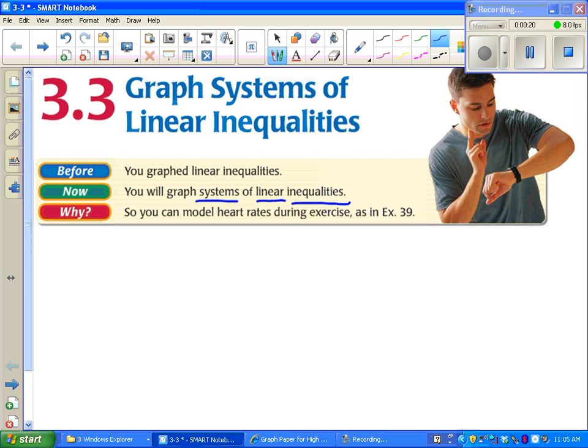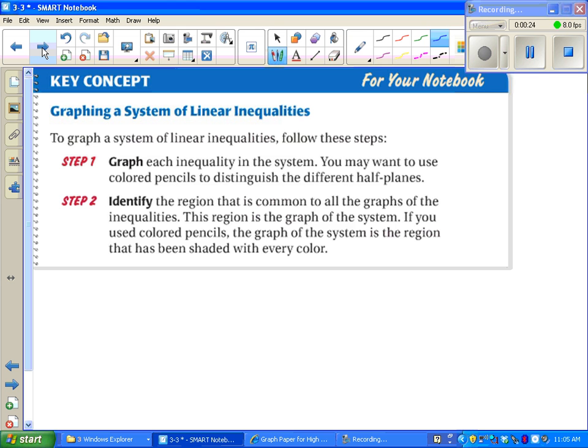So we're graphing, we're shading in between two lines. The way we do this is we graph each inequality and then we figure out where the common shaded area is. So we might shade above or below on certain lines. We want to see where that shaded region overlaps.